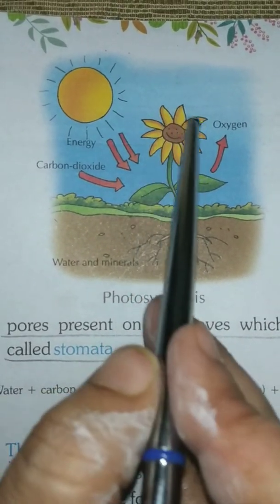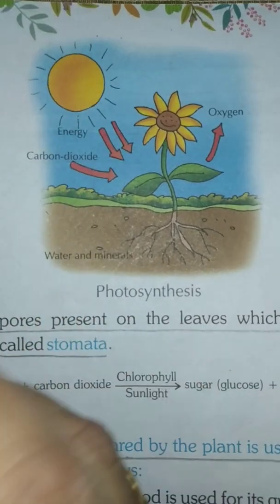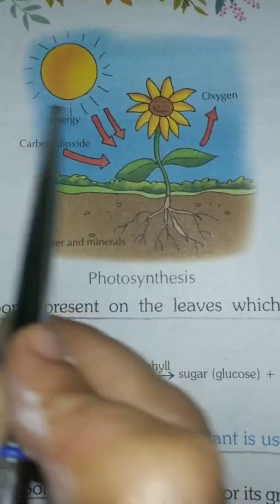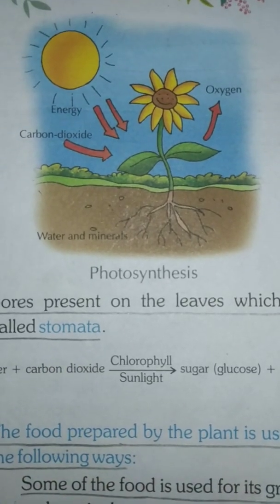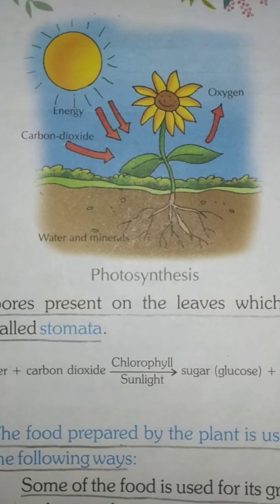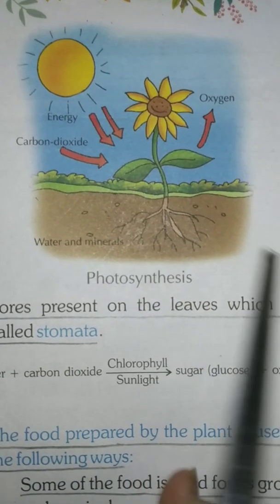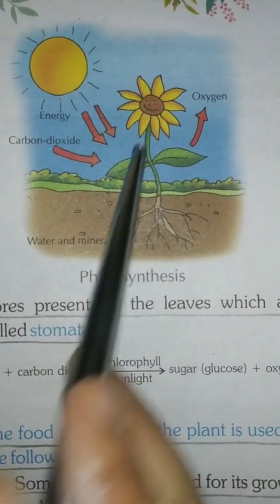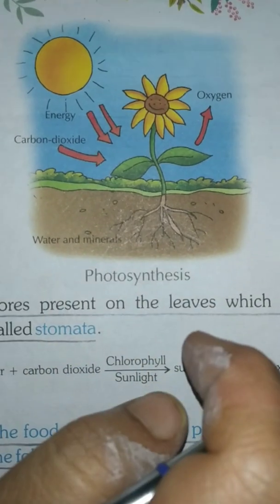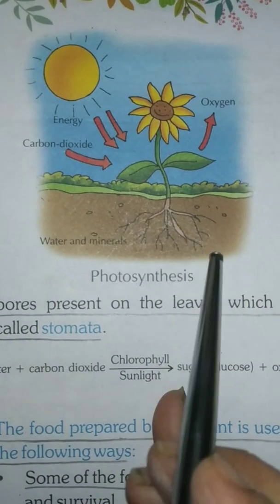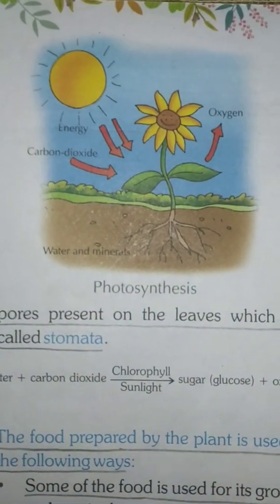Draw a beautiful flower and a sun in yellow color. The color of the roots is brown, leaves are green, the flower as you wish, and the sun yellow. Do coloring. These two diagrams are in the first term syllabus.